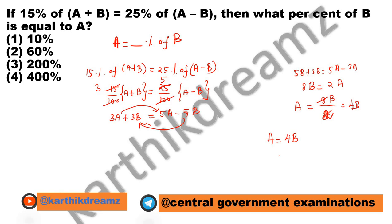When I need to bring in the percentage symbol, I will have to multiply by 100 and put the percentage symbol. Therefore, A equals 400% of B. So the answer is 400%.